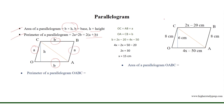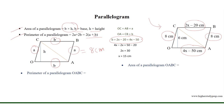Now, considering parallelogram OABC, the length of one pair of parallel sides is equal to A, which equals 8 cm. The length of the other pair of parallel sides gives us the equation 2X minus 20 equals 4X minus 50, which helps us find that X equals 15 cm. Substituting this value, we get CB equals 10 cm and OA equals 10 cm as well.